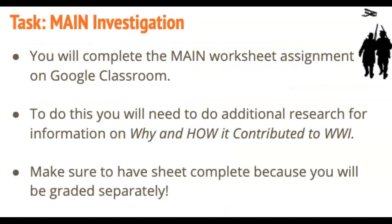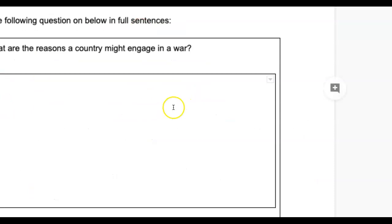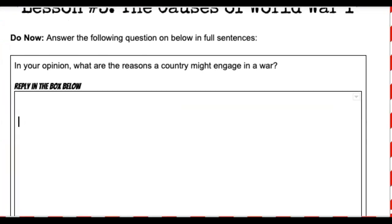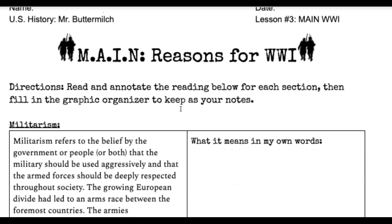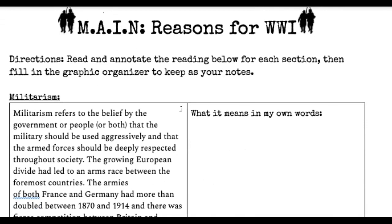We are back and we're looking at MAIN: M-A-I-N — Militarism, Alliances, Imperialism, and Nationalism. What you're going to do is go into Google Classroom, into your assignment, and figure out how each and every one of these played a role in World War I. Make sure you complete the graphic organizer as best as possible. If you go into your assignment, you'll go all the way down and find this reading that says 'MAIN REASONS FOR WORLD WAR I.' You're going to read and annotate the reading before each section.